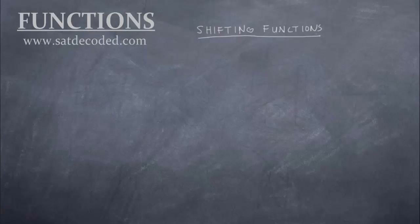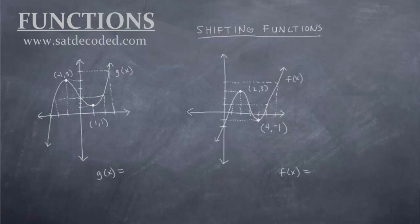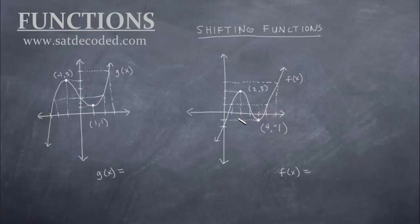Let's try another example — this one's a little bit harder. We have two functions: let's call this curve g of x and this curve f of x. I want to show that these are exactly the same function — the shape is exactly the same, not wider or skinnier, not rotated or flipped. They're exactly the same shape, just shifted locations. Let's track a point, preferably at a vertex or sharp corner. Let's track this point right here: (negative 1, 5) — negative 1 on the x-axis and up 5 on the y-axis. The corresponding point on our f of x function is already labeled: (2, 3).